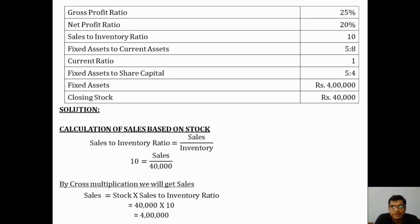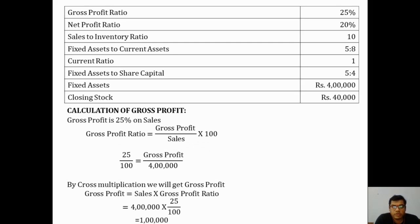Now that we have sales of 4 lakhs, we can calculate gross profit. The gross profit ratio is 25% on sales. The formula is gross profit divided by sales into 100, so 25/100 equals gross profit divided by 4 lakhs. By cross multiplication, gross profit equals 4 lakhs into 25 by 100, which gives us 1 lakh as the value of gross profit.